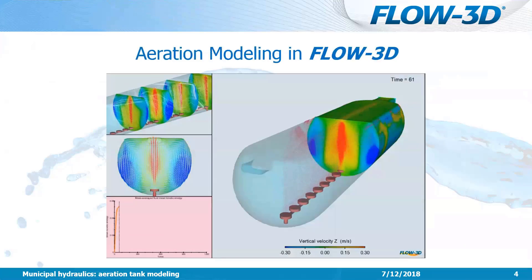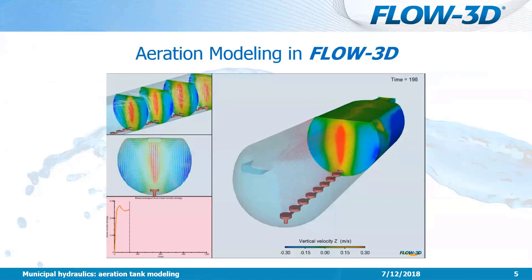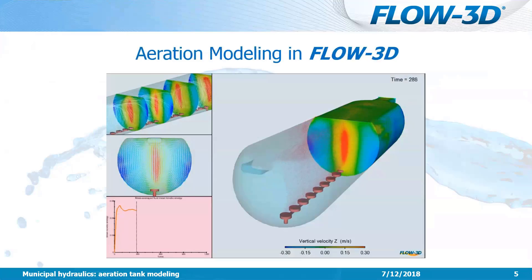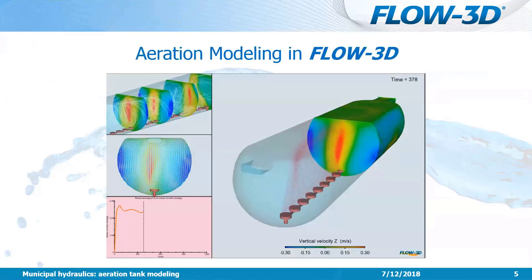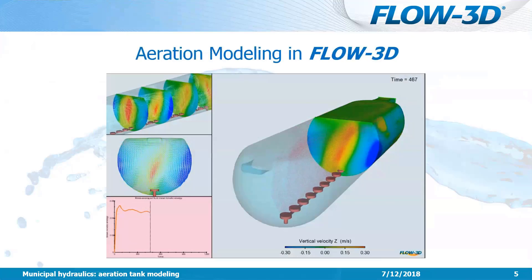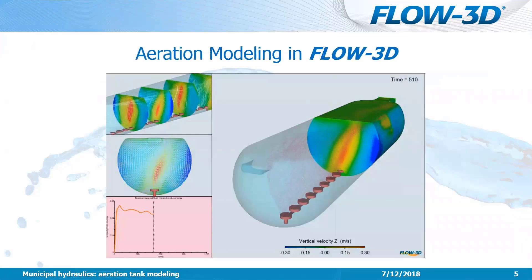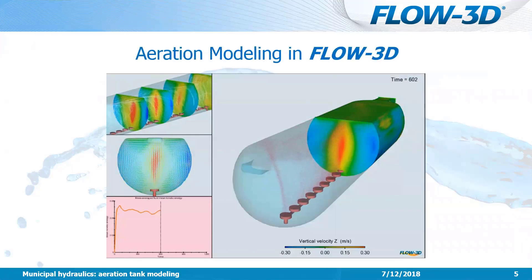Here are some examples of these types of models in Flow3D. Here's an aeration tank with some diffusers near the bottom introducing air bubbles into the fluid. That's going to drive a vertical velocity within the fluid and generate mixing within the tank.